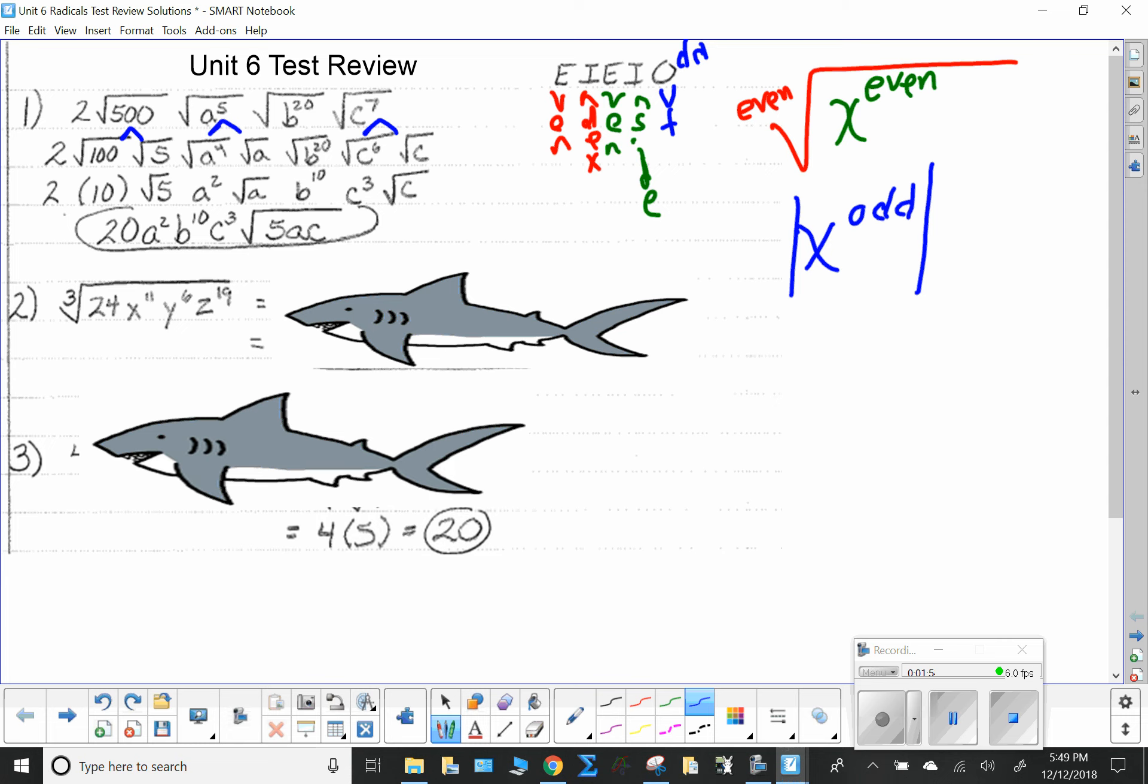Here and here. The 500 doesn't matter. The a to the fifth, that doesn't matter - that's odd on the inside, not even. b to the twentieth, oh, this guy I have to watch out for. And c to the seventh, I don't care about.